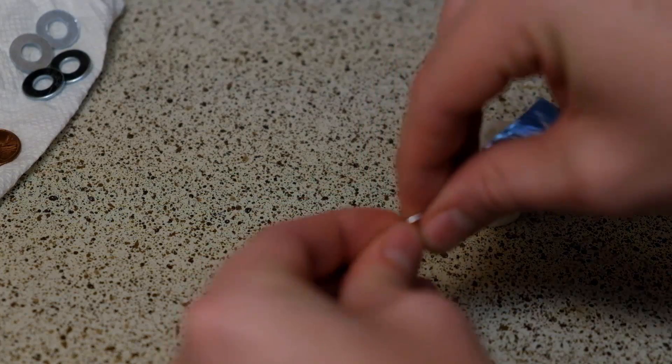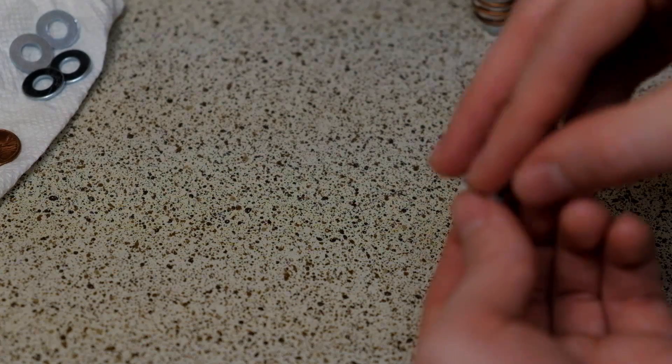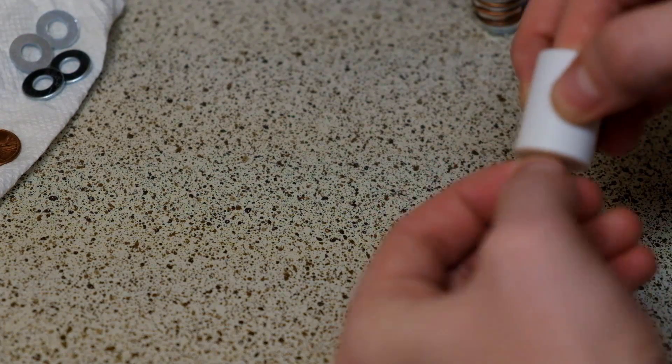Take the strip of foil and roll one end and fold the other. Place the rolled end through the plus sign of the top of the case. This will act as our positive terminal.